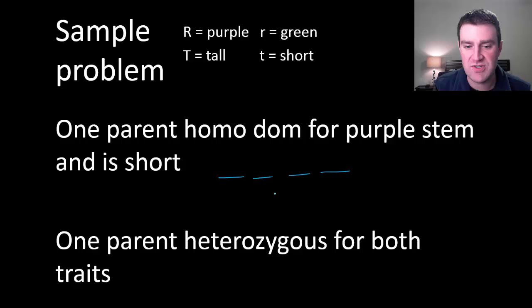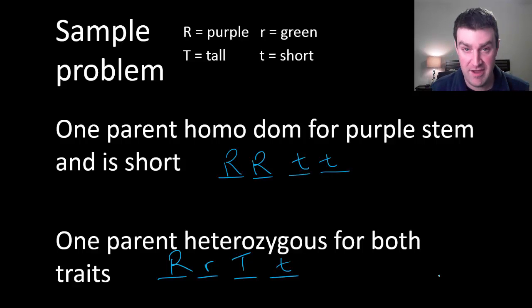Let's say that one parent is homozygous dominant for stem color but is short in height. So four total letters here, two traits. Homozygous dominant would be both dominant uppercase letters for that stem color gene and if they're short then they have to be homozygous recessive for that. And the other parent it says is heterozygous for both traits. Heterozygous means different so they have both different letters for both genes. So that would be their four letter combination.